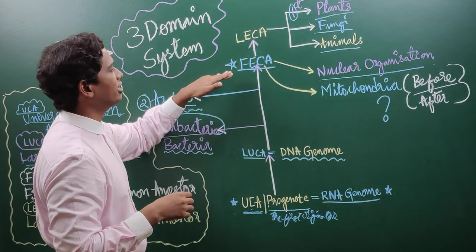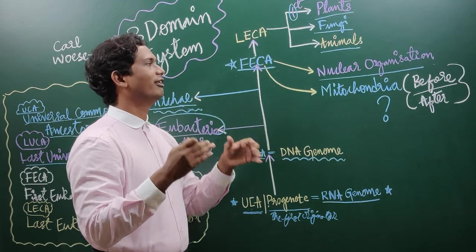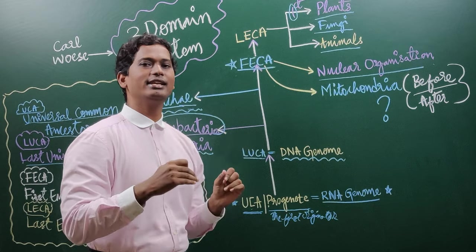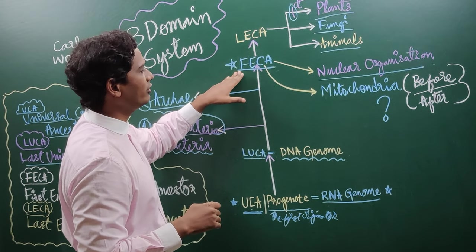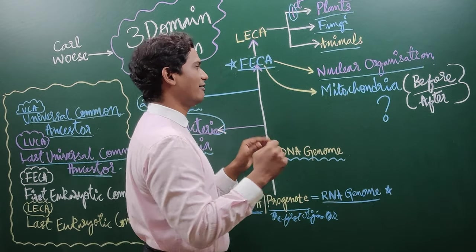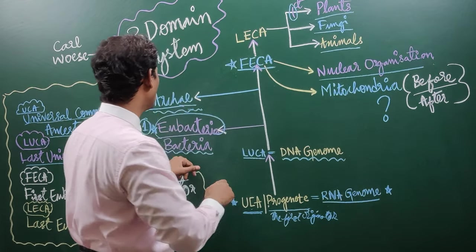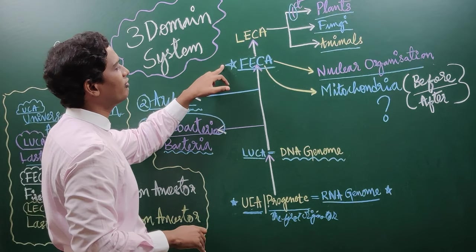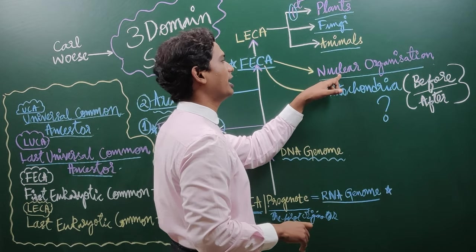After discovering the FECA, most of the scientists made this very conflict. And still it is conflict, still it is debatable point. What the conflict, where the conflict is, I will say. Actually, most of the scientists will say that in these two domains we don't have nucleus. This is the very first time we had a nucleus or the nuclear organization.